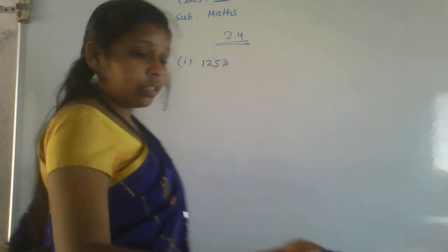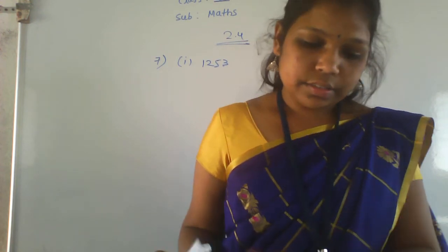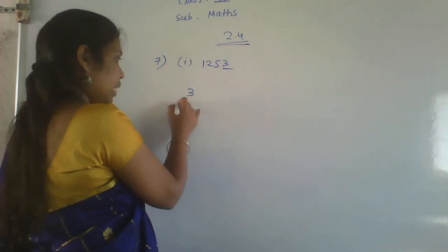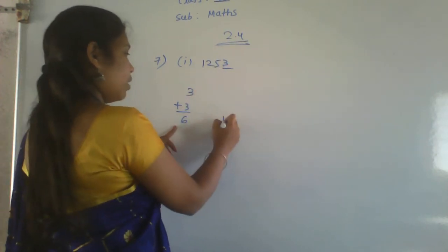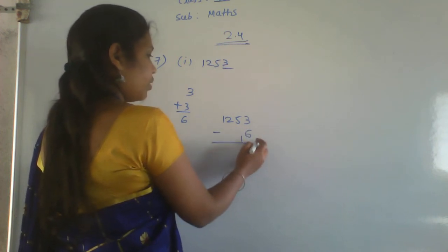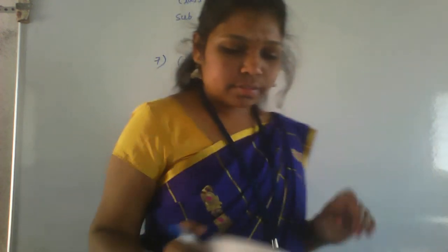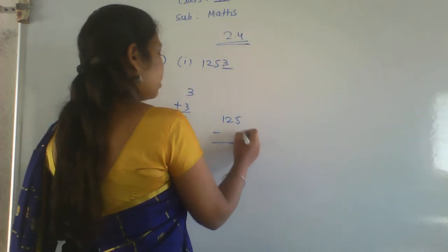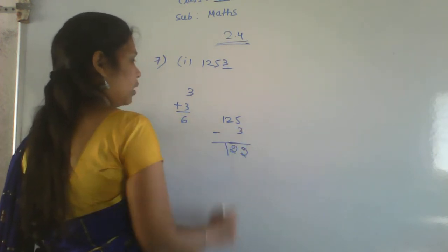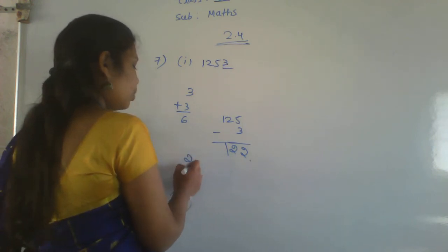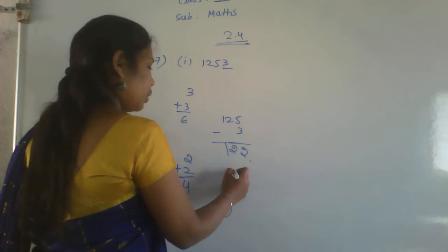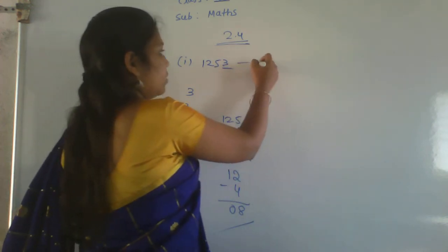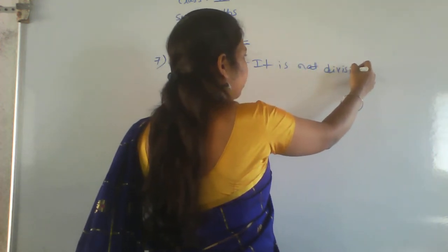To check divisibility by 7: take the last digit (3), double it to get 6, then subtract from the remaining number: 125 minus 6 = 119. Is 119 divisible by 7? Take last digit 9, double to 18 — wait, let's try again: take last digit 2 from 12, double to 4, then 1 minus 4... checking: result 8. Is 8 divisible by 7? No. Therefore 1253 is not divisible by 7.